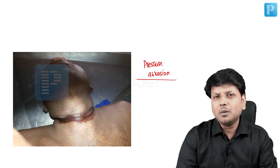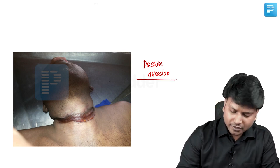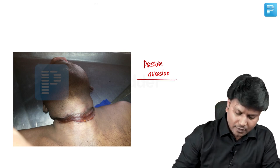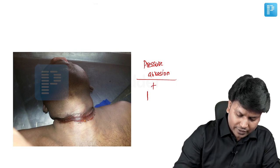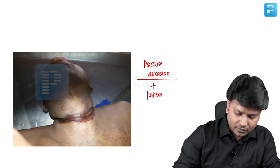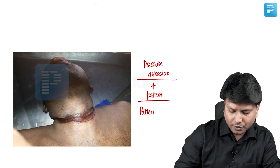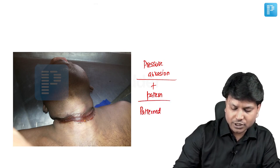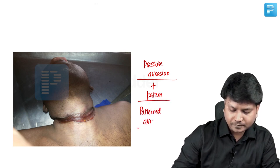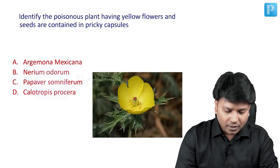A ligature mark is normally a pressure abrasion due to pressure causing crushing of the epithelium. But in this picture, we can also see the pattern of the material. So when pressure abrasion is present along with the pattern of the material, it is better to use the terminology patterned abrasion.